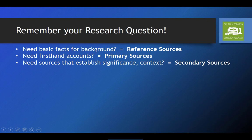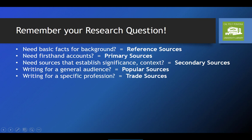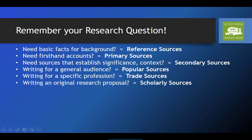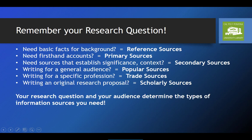Are you writing for a general audience? Popular sources may be all you need. Do you need insider information to talk to groups in a specific profession? You're probably going to be looking for trade sources. Do you need carefully reviewed works written by experts to help you situate your own research project? You're going to need peer-reviewed scholarly sources. Your research question and your audience determine the types of information sources you need.